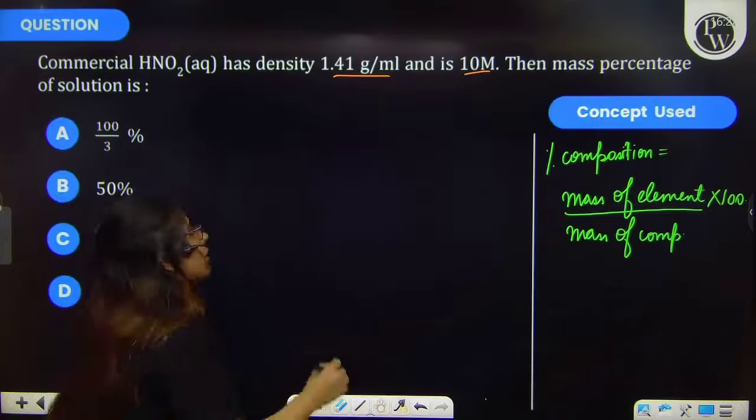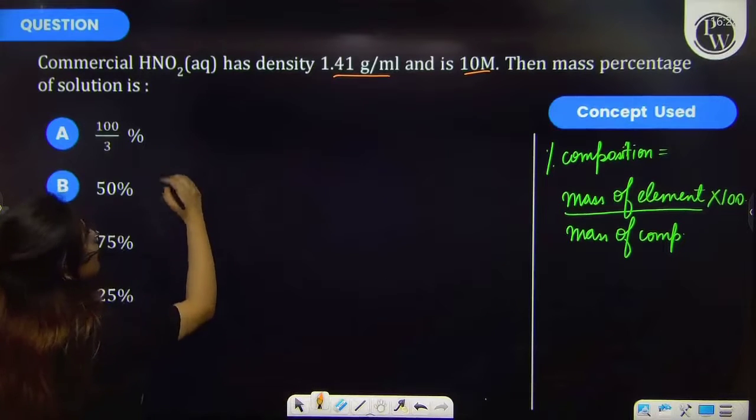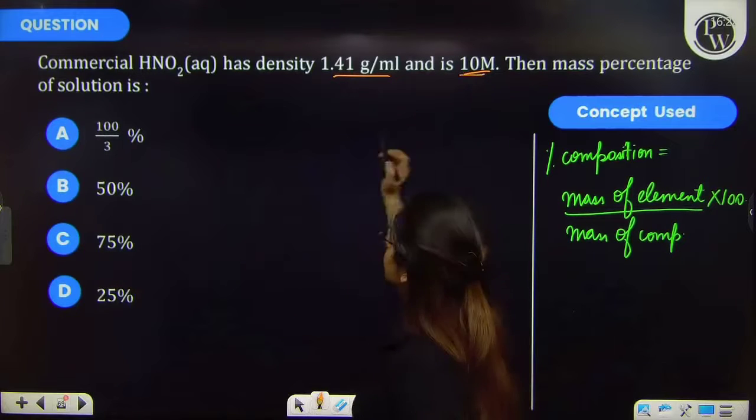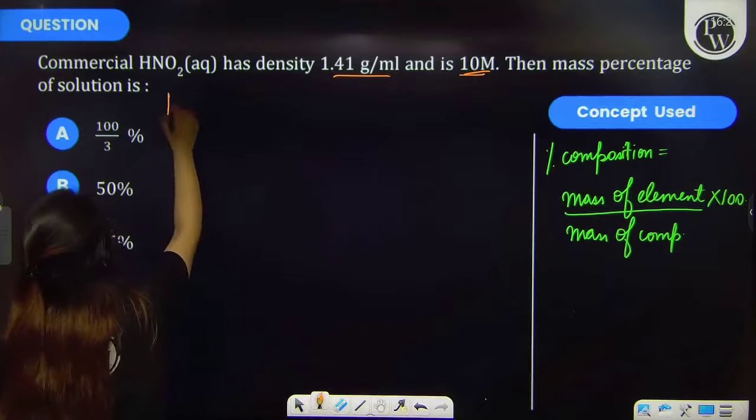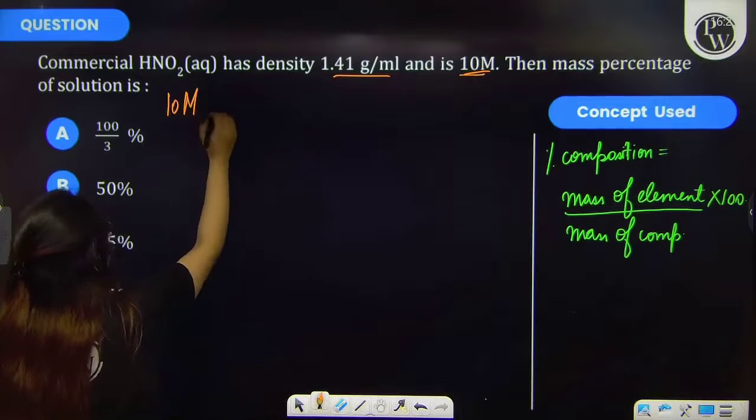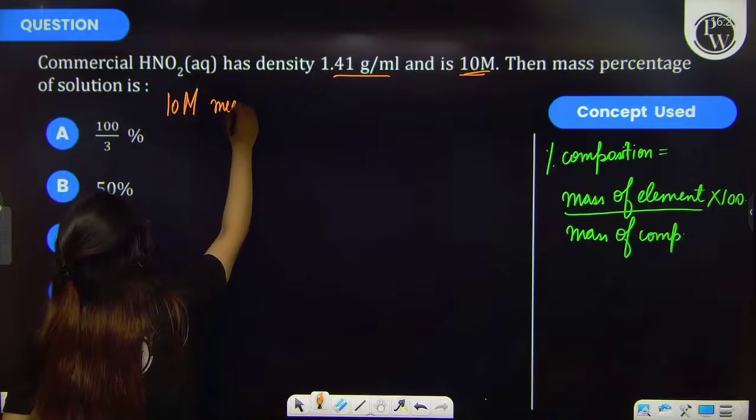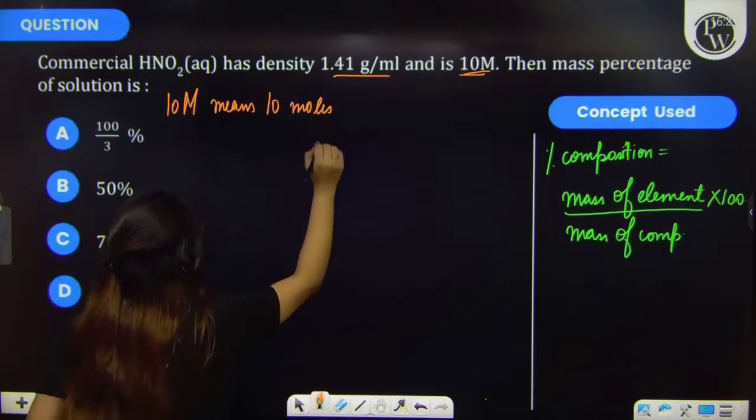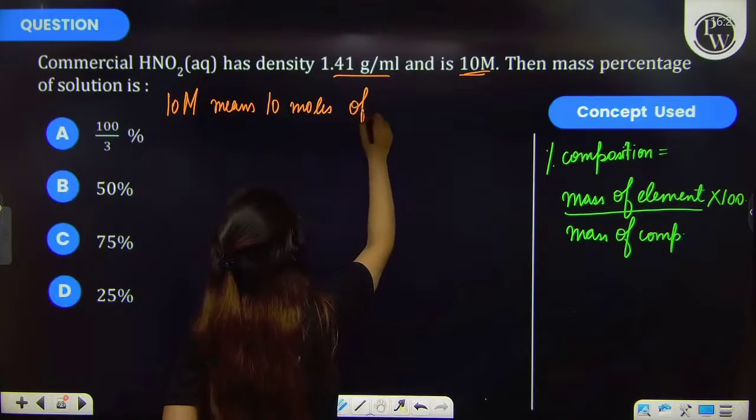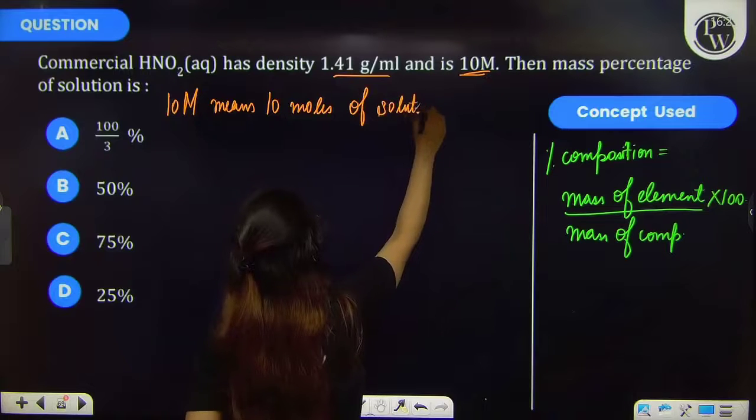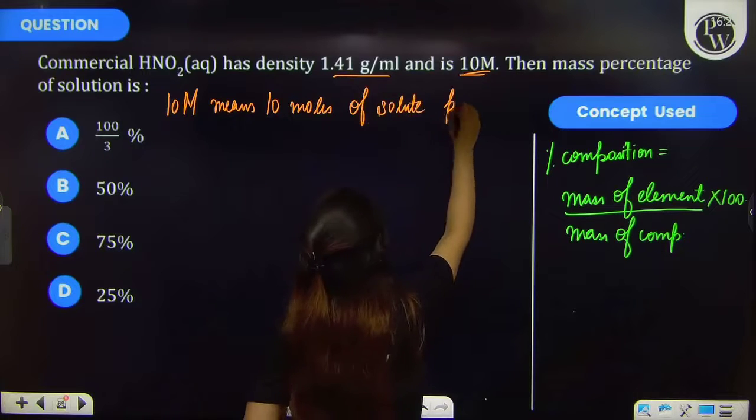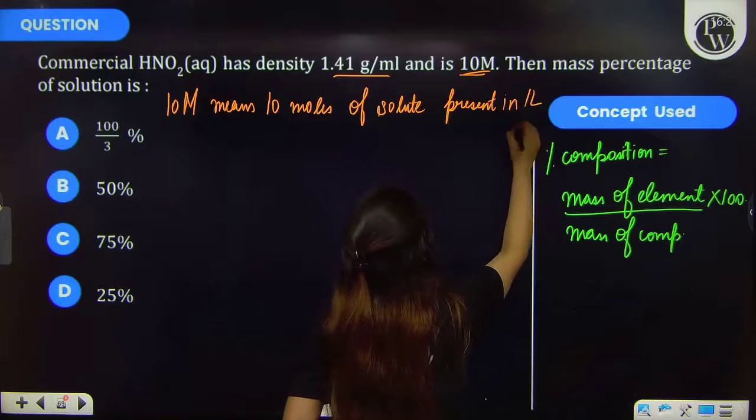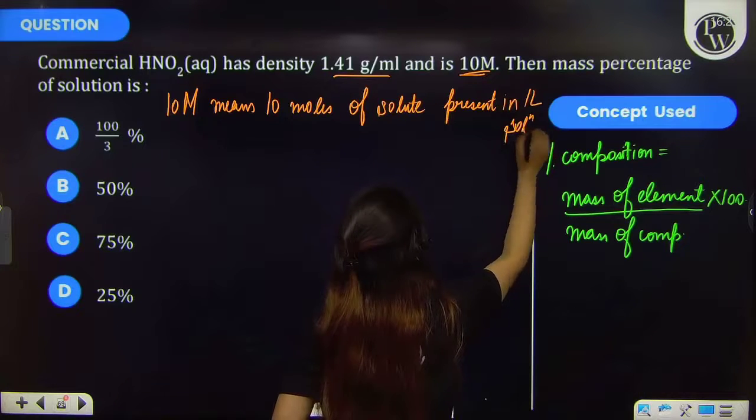Now you have been provided with the density. Density is 1.41 gram per ml, so by this you will be finding the mass of solution. And molarity is given to be 10 molar. 10 molar molarity means 10 mol of solute present in 1 litre solution.